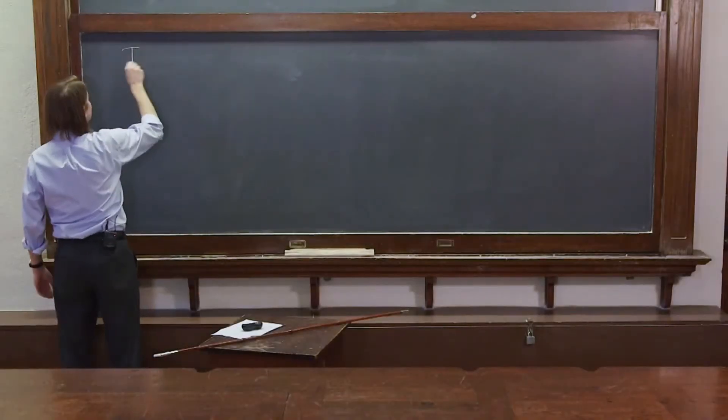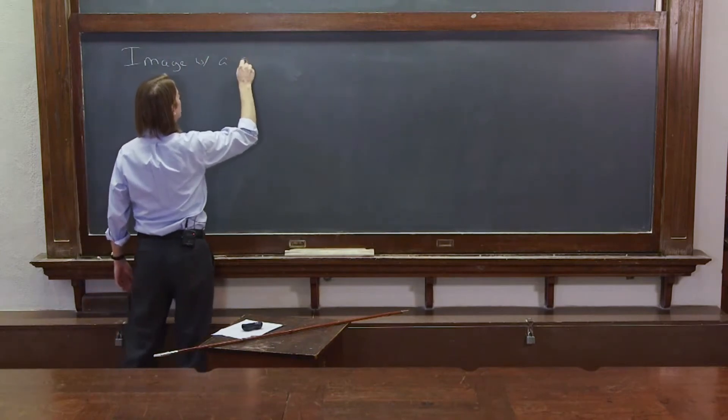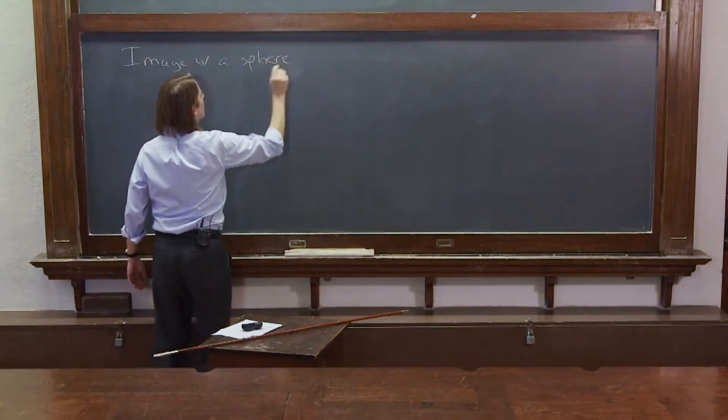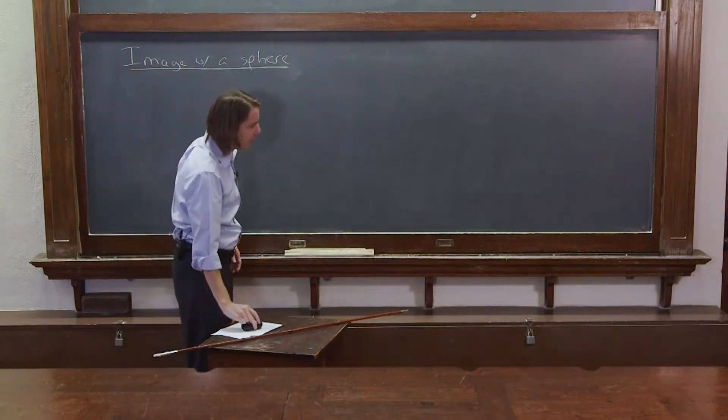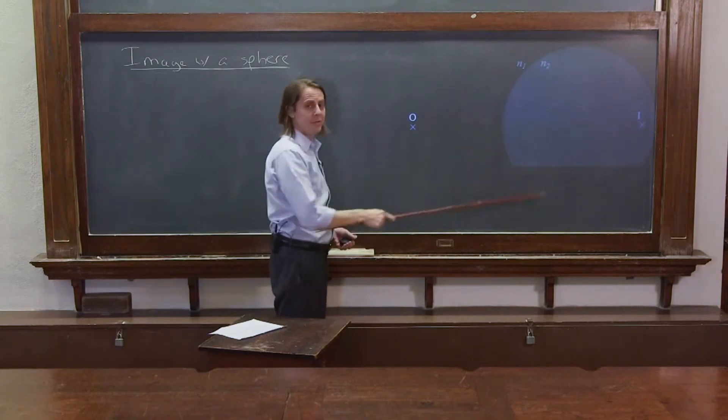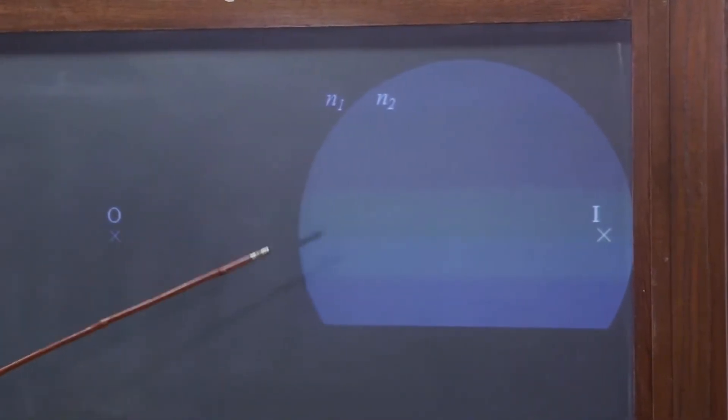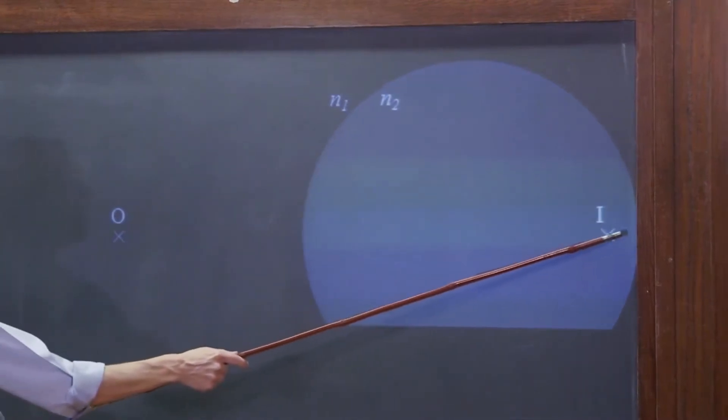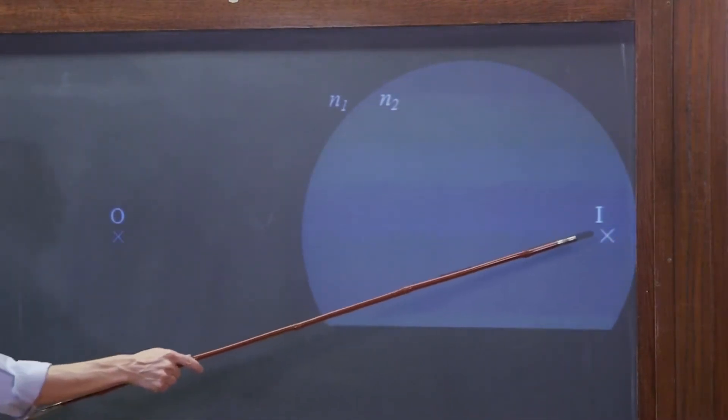Let's do some geometrical optics with a sphere. So first, diagram of the sphere. Here we've got a big sphere, and we're going to start out thinking of an object outside the sphere. A bunch of light rays will come off, and we're going to focus inside the glass sphere itself. We'll turn it into a lens later.